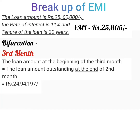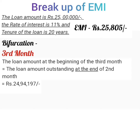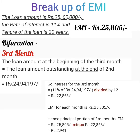Third month: the loan amount at the beginning of the third month equals the loan outstanding at the end of the second month, which is Rs 24,94,197. In the third month, interest will be calculated on Rs 24,94,197. Interest for the third month equals 11% of Rs 24,94,197 divided by 12, which equals Rs 22,863. The EMI for each month is Rs 25,805, so the principal portion of the third month's EMI is Rs 25,805 minus Rs 22,863, equaling Rs 2,941.